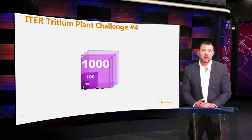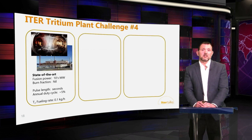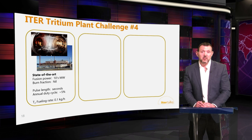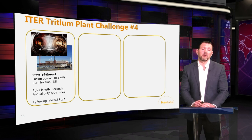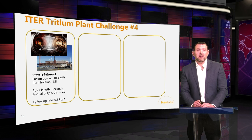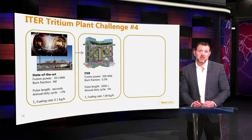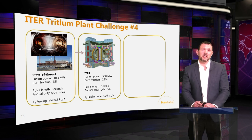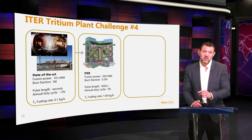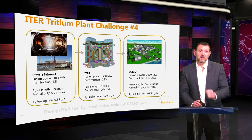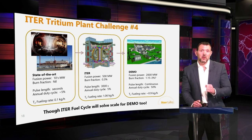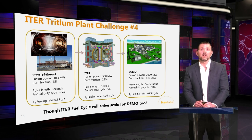The last challenge is one of scale. Current state-of-the-art fusion reactors have been modest in their fusion power, burn length, and fuel cycle throughput — around 0.1 kilograms per hour. Here at ITER we are taking things up an order of magnitude to around a kilogram per hour. This is proving challenging, but the good news is that the fuel cycle demands for the future DEMO reactor are similar, so the problems we're solving today at ITER will also solve those of the next stage demo reactors.